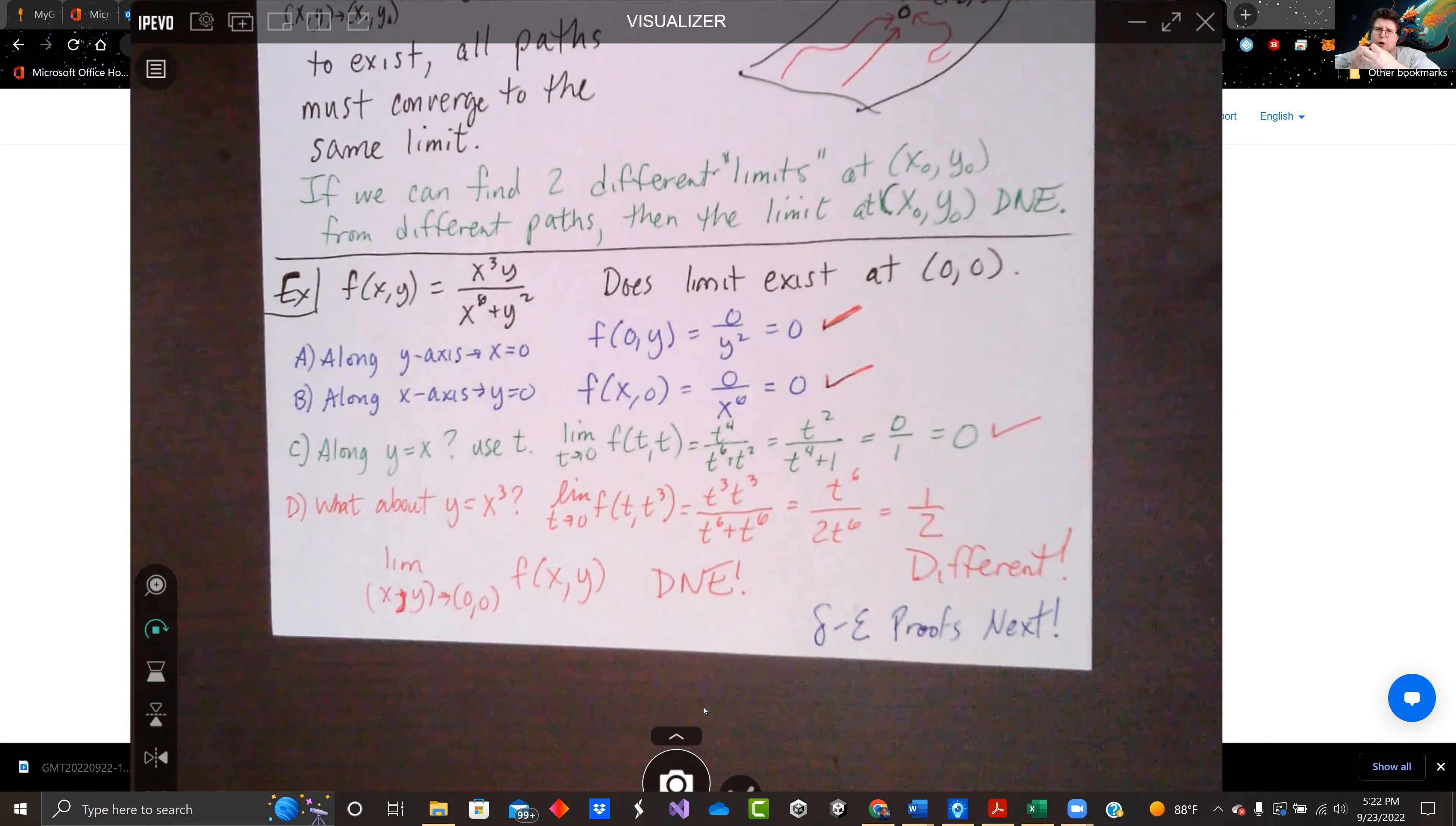But what if we follow a weird path like y=x³? The limit as t goes to 0. If we set x=t, then y=t³. We end up getting t⁶ on top and 2t⁶ on bottom, which simplifies to one half. We're getting different limits.